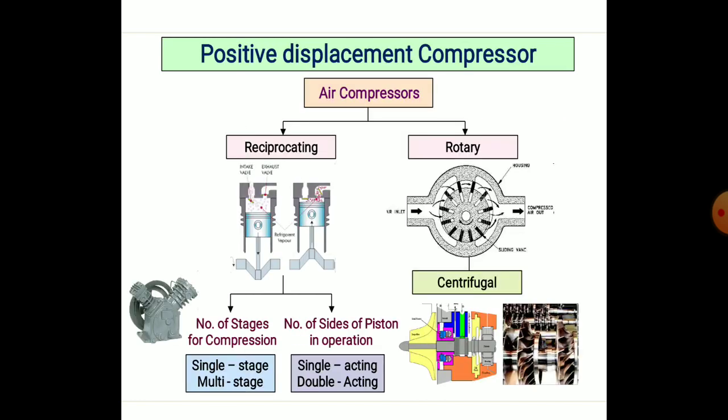On your screen you can see the positive displacement compressors. The main divisions are reciprocating and rotary. In rotary compressors, centrifugal vanes are provided which rotate around the periphery of a circular disc. On the left side you can see the air inlet at atmospheric temperature and pressure, and due to rotation of the vanes, the pressure of the air is raised.